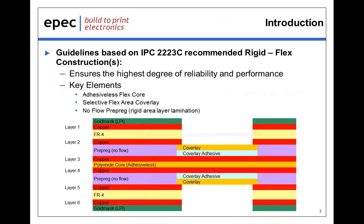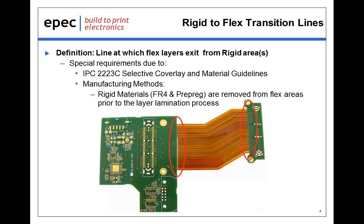Moving on to the first item — and this is definitely the most unique and most important element — that is the rigid-to-flex transition line, where the flex extends out from within the rigid areas and becomes visible and extends over to however many other rigid areas exist. The special requirements pertain back to IPC's 2223 standard and to the unique manufacturing methods that apply in the construction of a rigid flex. One of the most significant is that in the most common manufacturing method, the rigid material that would normally exist in the rigid areas is actually removed from all of the layers prior to the actual layer lamination process.